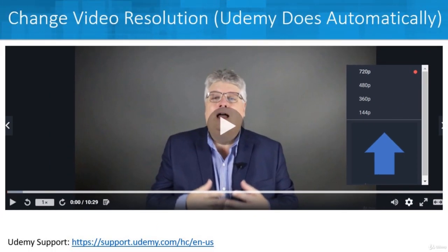Also, your video resolution will automatically be streamed at the appropriate level so it plays smoothly from Udemy — Udemy controls that automatically. But you can manually change it. Everything is filmed in 1080p high definition, but you can lower that down if you find videos are sometimes choppy, which is more likely due to your internet connection. You can always adjust that so you have a nice, smooth experience.